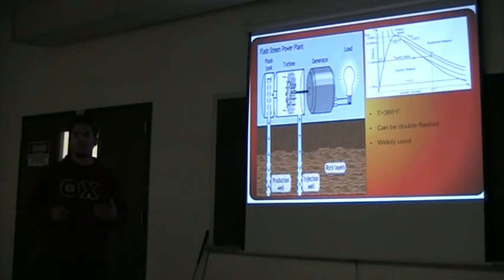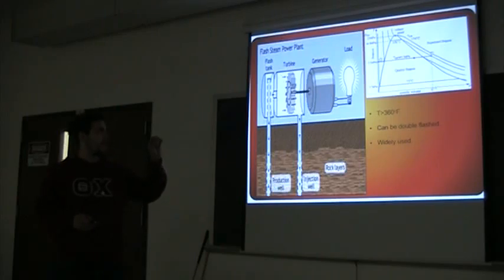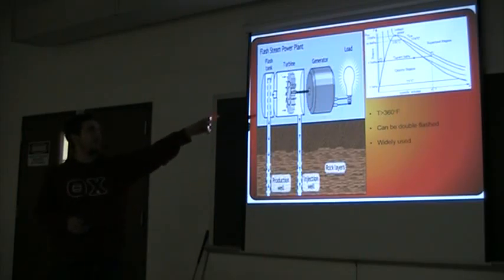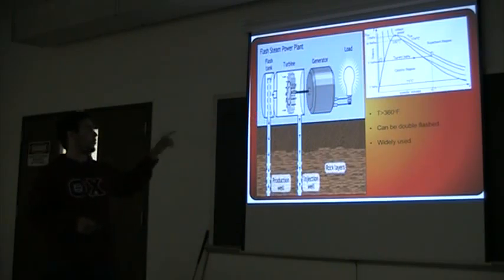To solve this problem, the most commonly used type right now is the flash steam power plant, where you don't have temperatures that go into the superheated region but they are still high enough that you can create a change of volume to take it to that final superheated stage needed to enter the turbine. You can flash it more than once to get more power out of the process, and this is the most commonly used right now.